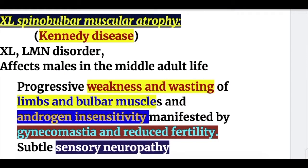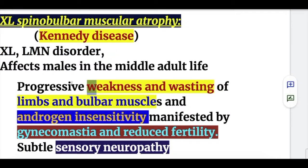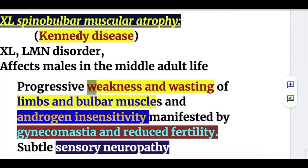X-linked spinobulbar muscular atrophy, or Kennedy's disease, is an X-linked lower motor neuron disorder affecting males in middle life. It causes progressive weakness and wasting of the limbs and bulbar muscles, androgen insensitivity leading to gynecomastia and reduced fertility, and a subtle sensory neuropathy.